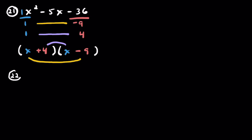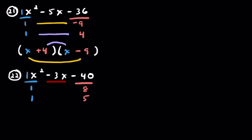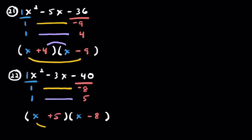Problem 22: x squared minus 3x minus 40. One and 1. For negative 40, it has to be 3 apart — 8 and 5. Since the b term is negative, the one with greater absolute value gets the negative sign. So negative 8 and positive 5. Pairing these: (x − 8)(x + 5).